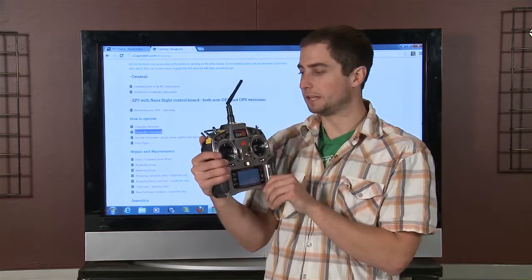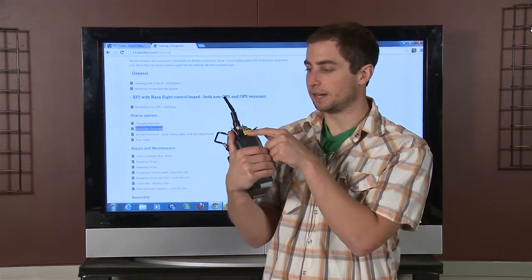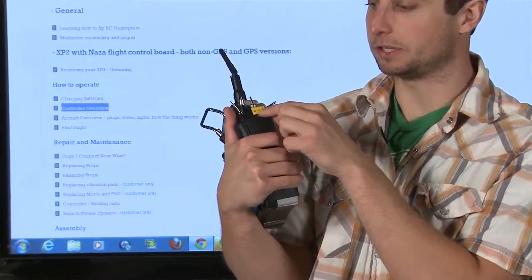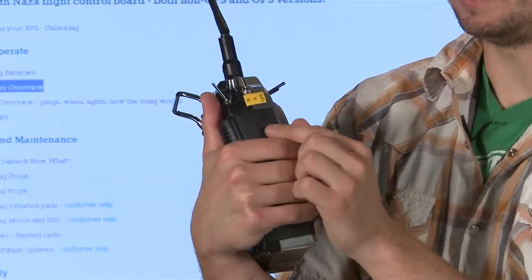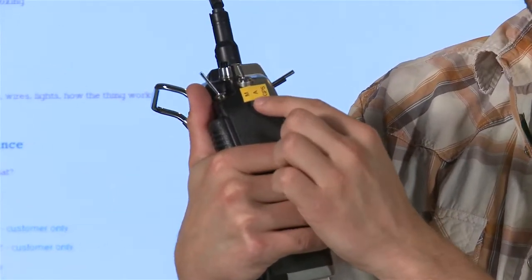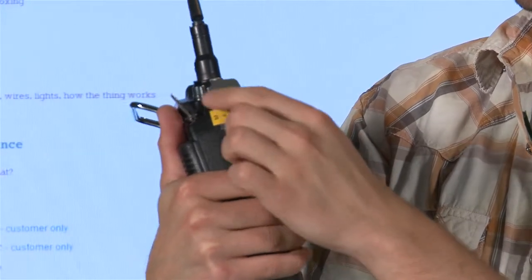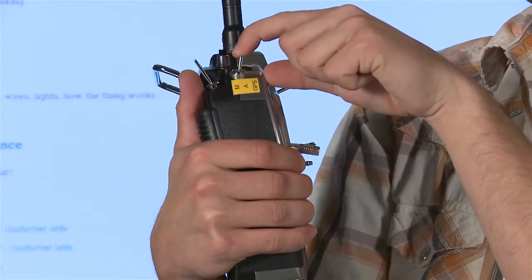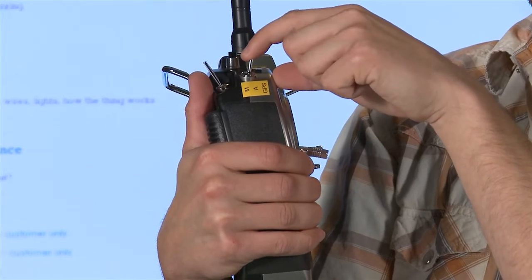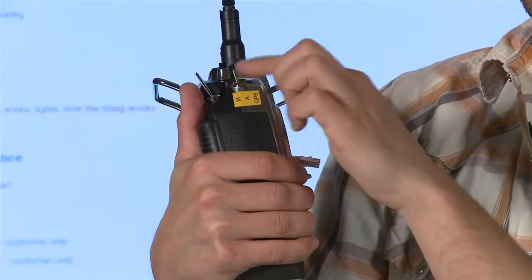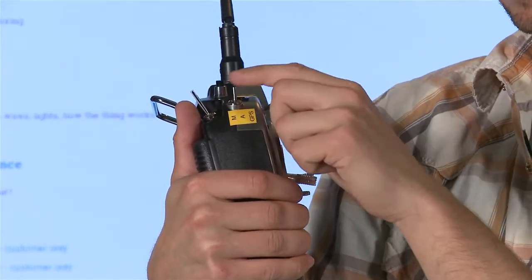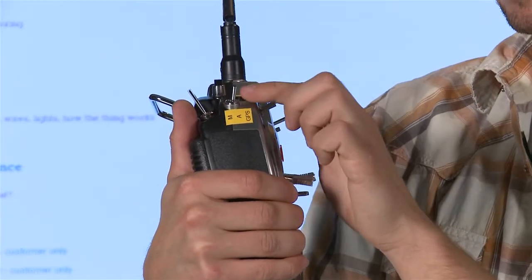What we did is we labeled these stickers on the side here with what switch does what. So this switch on the left says M for manual and A for altitude mode and GPS mode. This is your different flight control modes. So it's a three-way switch and you can see it's very simple. Forward is manual, middle is altitude hold, and back is GPS.